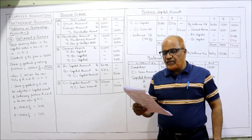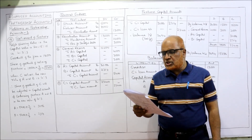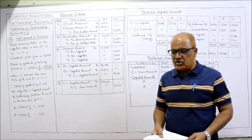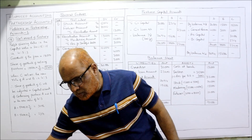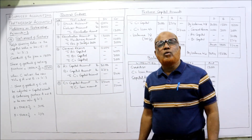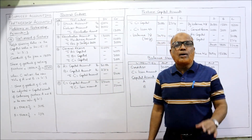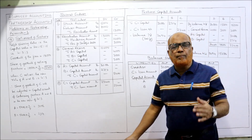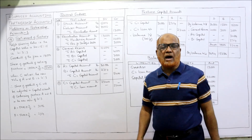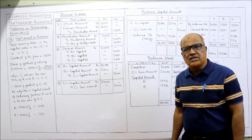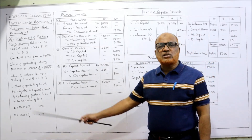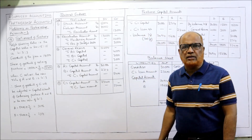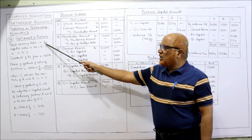We are required to pass journal entries and prepare the revaluation account, partners' capital accounts, and then make the balance sheet of A and B after retirement of C. Before that, we calculate the share of goodwill of retiring partner C. The profit sharing ratio is given as capital ratio.